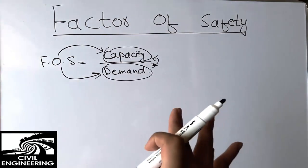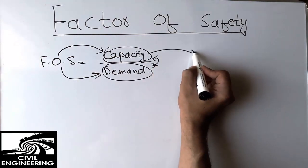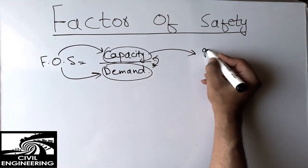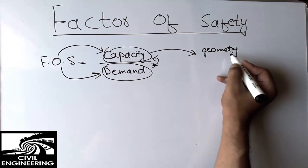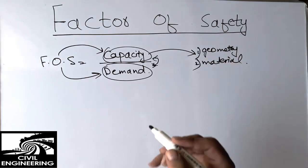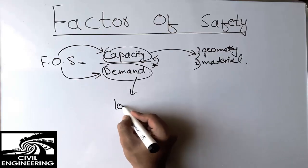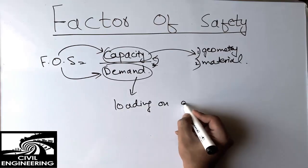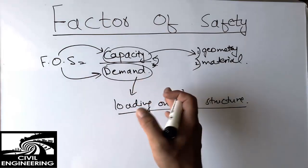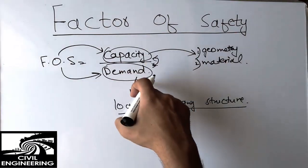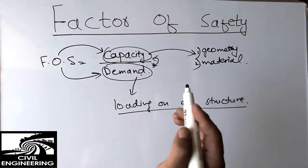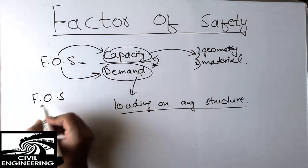Capacity depends on the structure's own properties — mainly the geometry of the structure and the material strength. Those are the two main properties: number one is geometry, number two is material. Demand refers to the load coming on any structure. Dividing capacity by demand gives us the factor of safety.